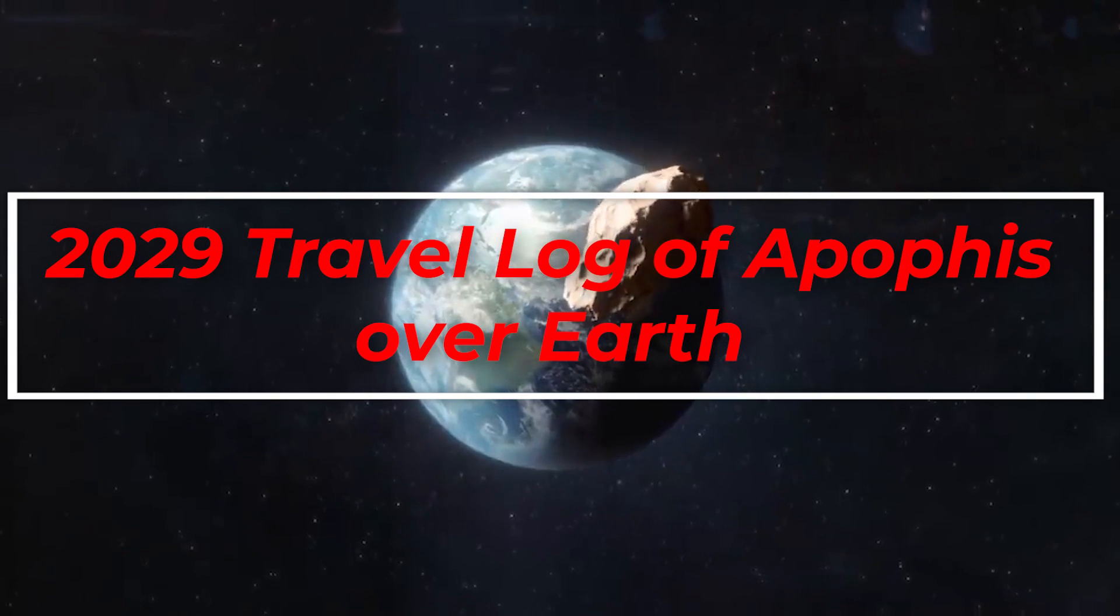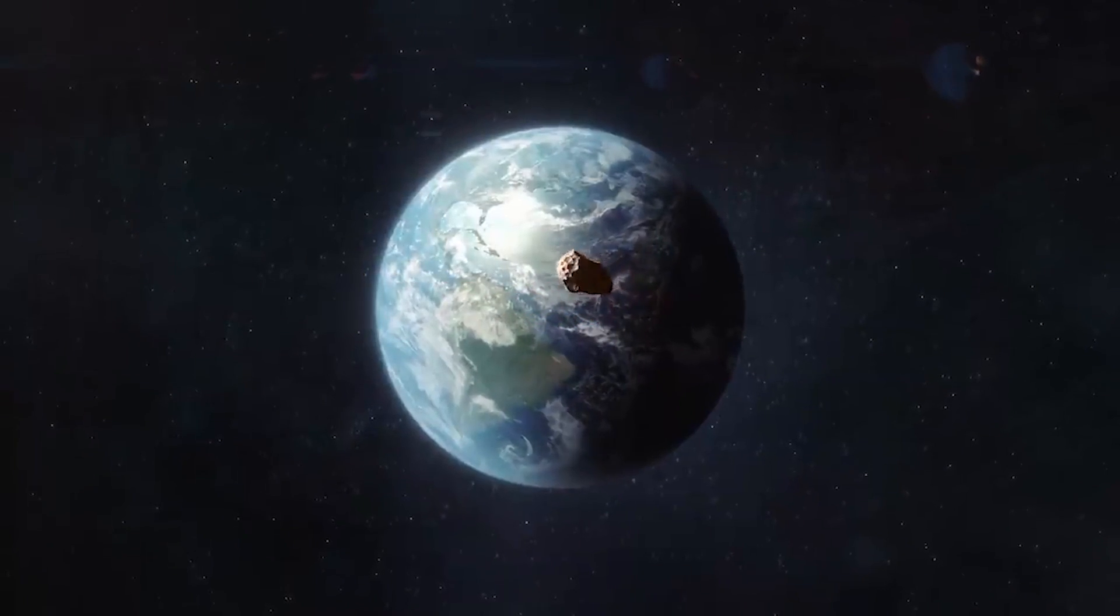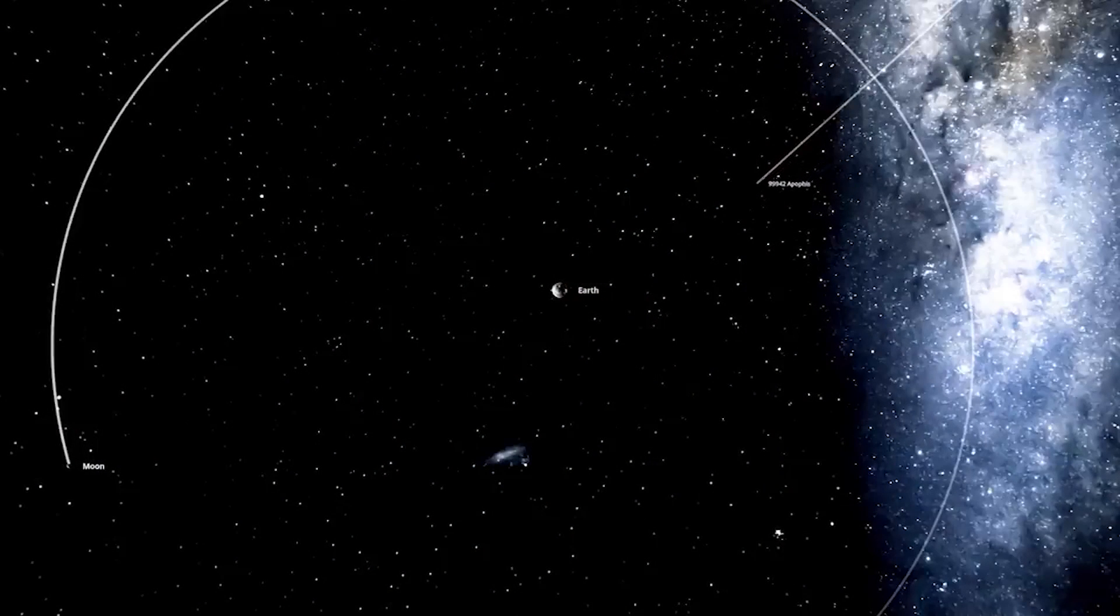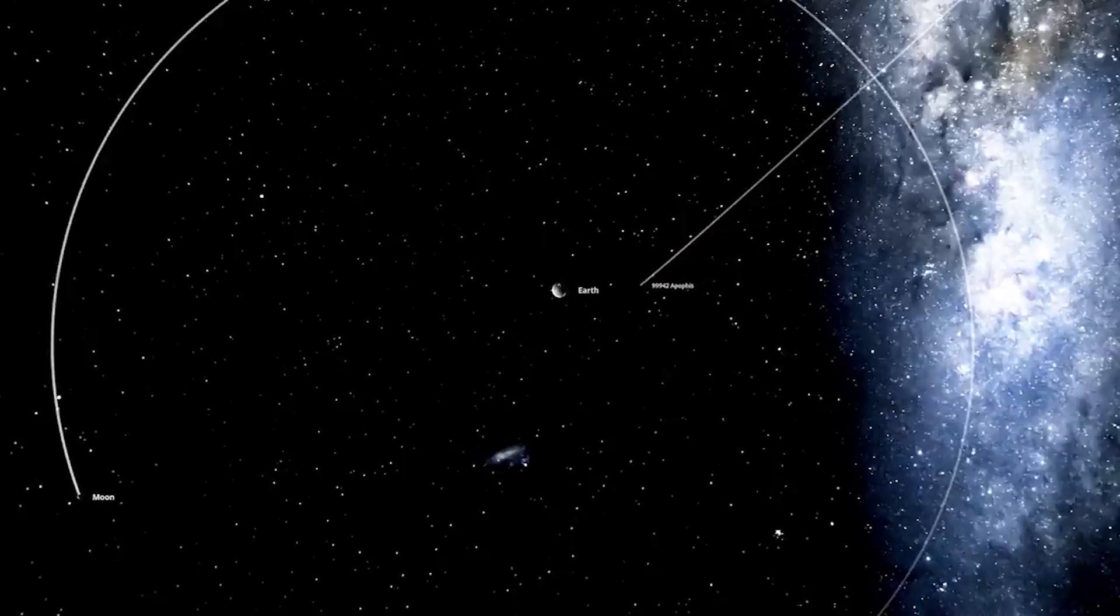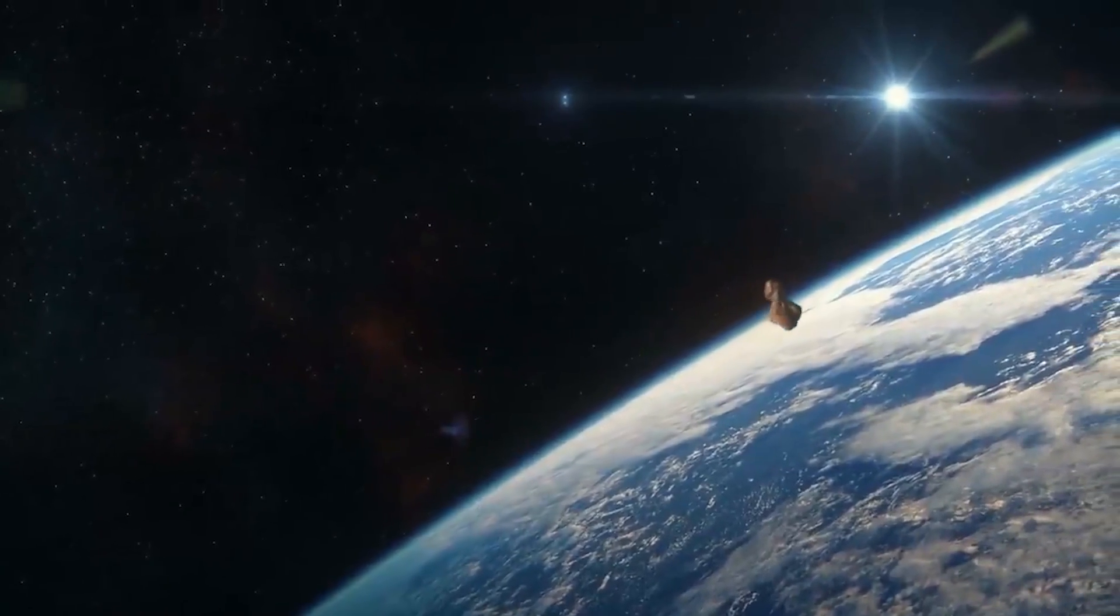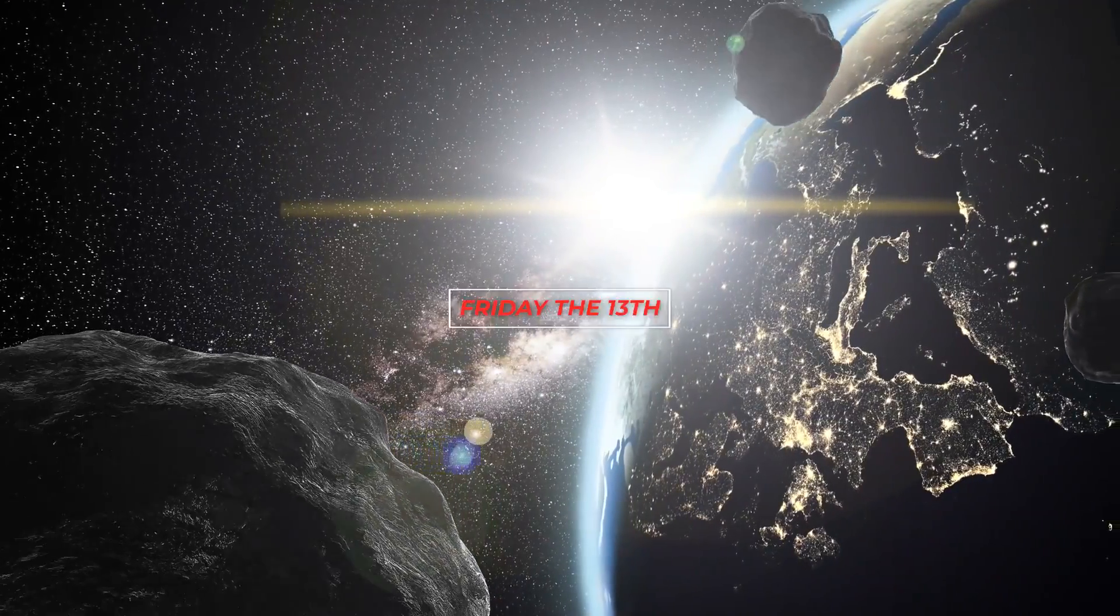Apophis is set to pass by the Earth on the 13th of April, 2029. Have you noticed that this Apophis seems to love zipping by the Earth only on Fridays? It was a Friday on the 5th of March this year when it flew by, and it's going to be doing it again on a Friday in 2029. Friday the 13th no less.